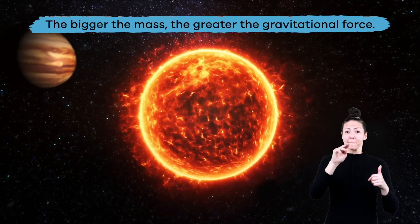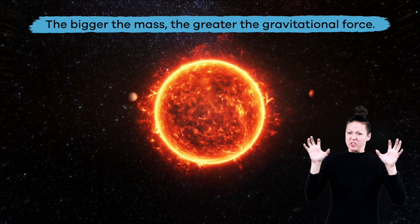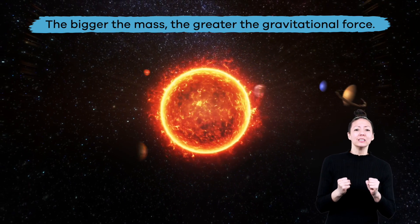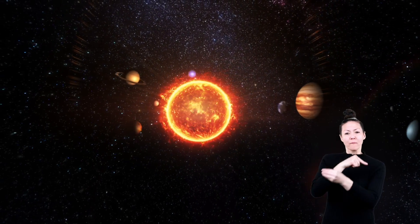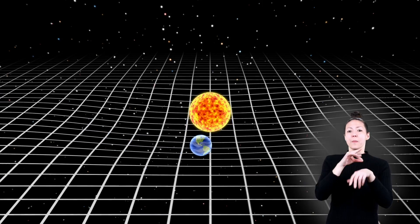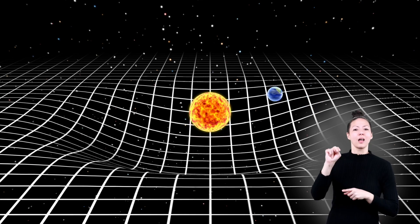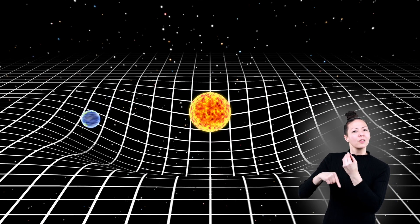Remember this. The bigger the mass, the greater the gravitational force. This is why all of the planets in our solar system revolve around the Sun. The Sun is so large compared to the planets that each planet is pulled or attracted to the Sun as they orbit around it.